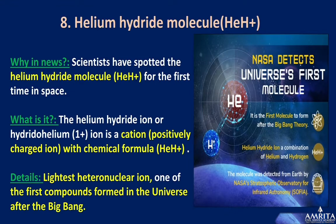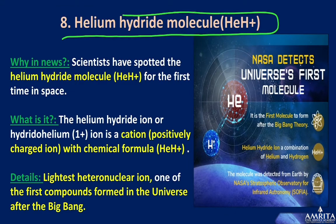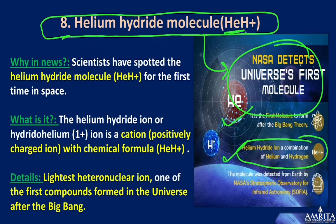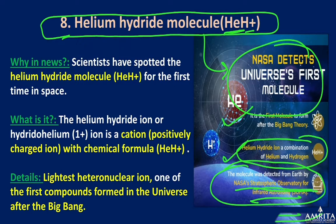Helium hydride molecule: NASA detected what is considered the universe's first molecule — the helium hydride ion (HeH+), a combination of helium and hydrogen. It was detected by NASA's SOFIA — Stratospheric Observatory for Infrared Astronomy.